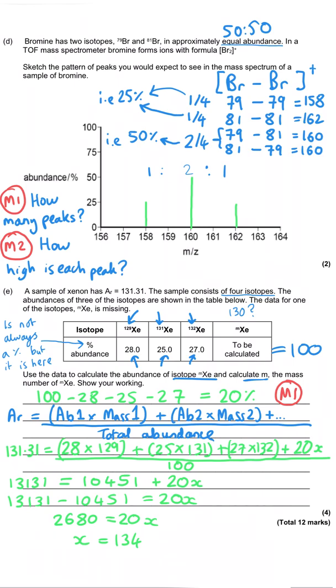Then we do a little reasonableness check. Let's look back. We are calculating here what the mass of this particular xenon isotope is. The others are 129, 131 and 132. So 134 fits well into that sequence. So this looks like we found a good answer for our fourth and final mark.